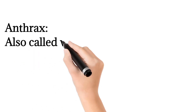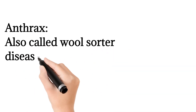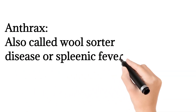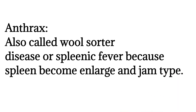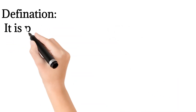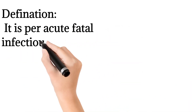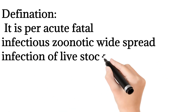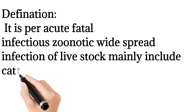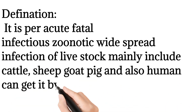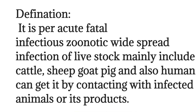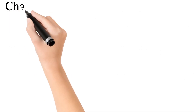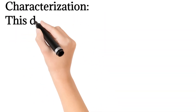Anthrax, also called wool sorter's disease or splenic fever — named because the spleen becomes large and jam-like — is a per-acute, fatal, infectious, zoonotic, and widespread infection of livestock, mainly including cattle, sheep, goat, and pig. Humans can also get it by contacting infected animals or their products.